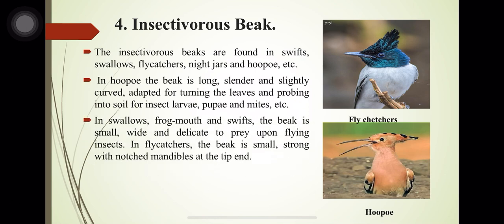In swallows, frogmouth and swifts, the beak is small, wide and delicate to prey upon flying insects. In flycatchers, the beak is small and strong with a notched mandible at the tip. Rictal bristles are also present at the base of the beak.